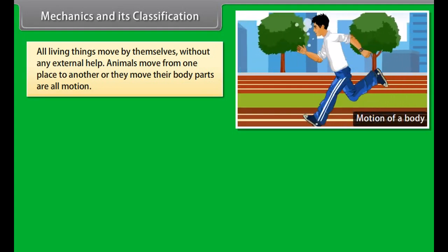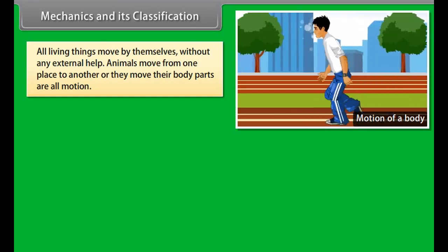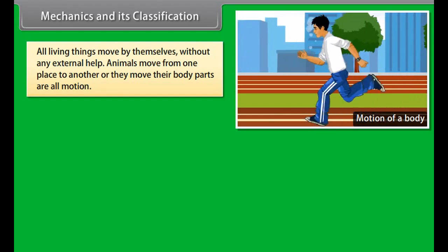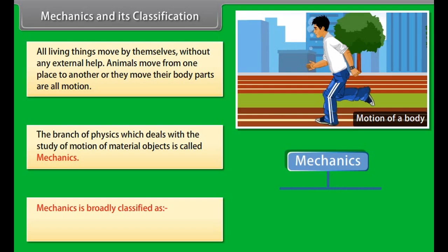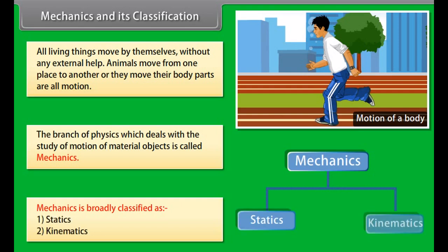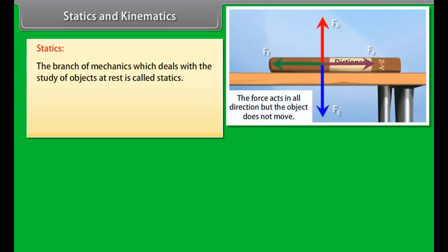Mechanics and its classification: All living things move by themselves without external help. Animals move from one place to another, or they move their body parts — all of this is motion. The branch of physics which deals with the study of motion of material objects is called mechanics. Mechanics is broadly classified as: one, statics, and two, kinematics.